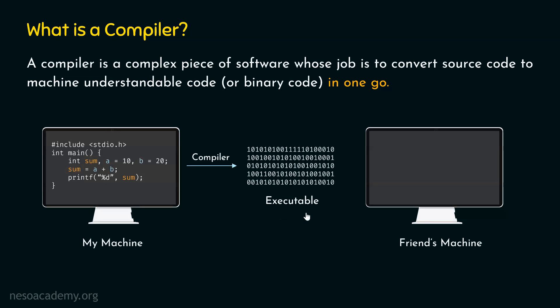This is called an executable. If my machine is a Windows machine, then my executable should have an extension .exe. If I compile my code on a Windows machine, the executable will have extension .exe. If my machine is a Mac machine and I compile this code on Mac, I will get an executable with a .app extension. Extension matters because the .exe code is capable of running on Windows machines only, while .app code is capable of running on Mac machines. So let's say my machine is a Windows machine — then the executable must have a .exe extension.